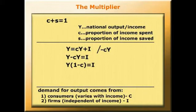Now we divide each side by 1 minus c. So that gets rid of 1 minus c on the left-hand side, and we have Y equals I over 1 minus c.